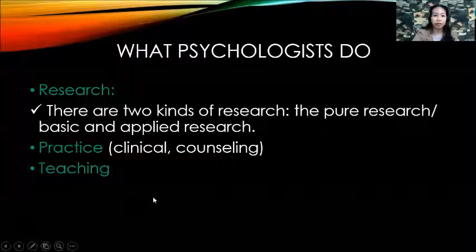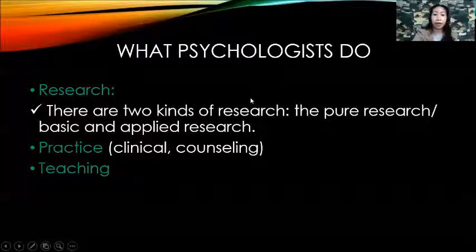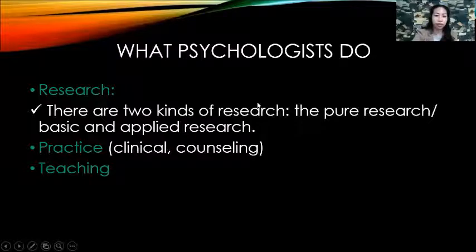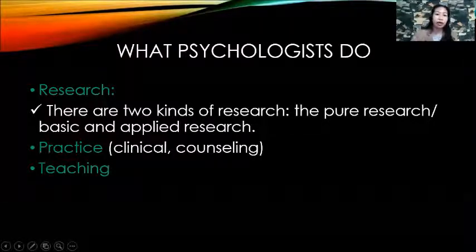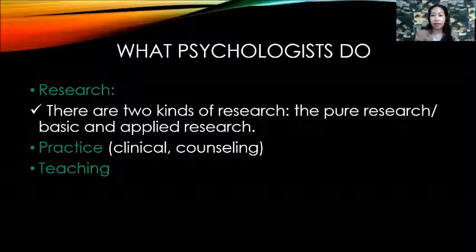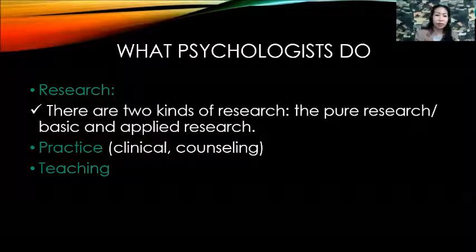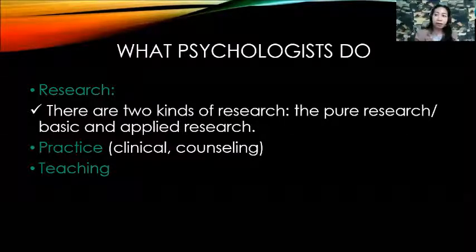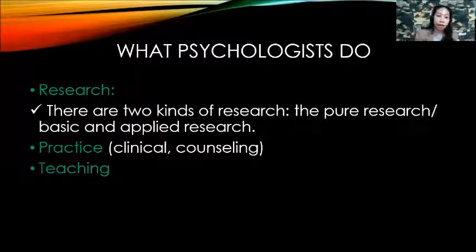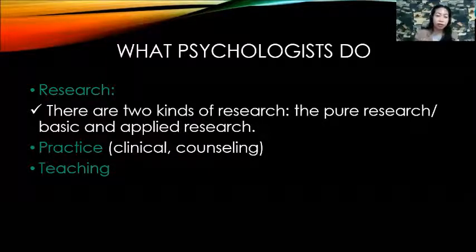What do psychologists do? First, we have research. The study of psychology involves research, process, or procedure, wherein there should be gathering of facts or data. There are two kinds: pure research, and basic and applied research. In applied research, whatever results come from the gathered data, we have to act upon it — do something about the problem or issue being studied.